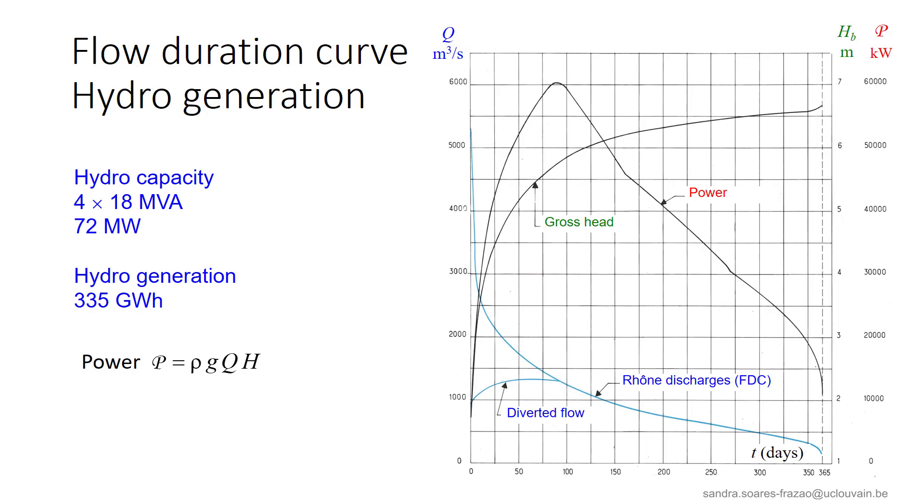Then, as the power is calculated as the product of the discharge Q and the head H, we can construct the power curve, this one, and from there estimate the total production that can be expected from the site.